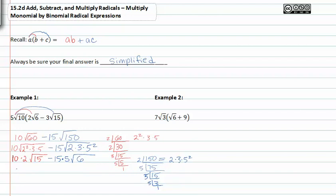At this point I can simplify by multiplying the factors that are in front of the roots. And I'm going to get twenty root fifteen minus seventy-five root six.